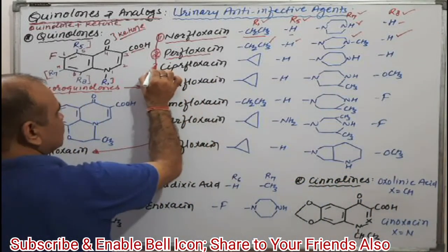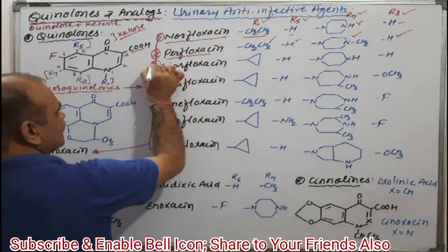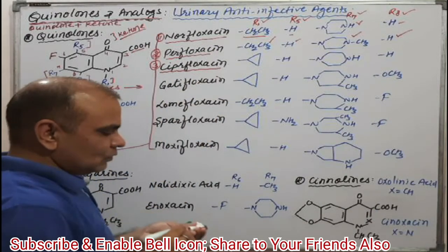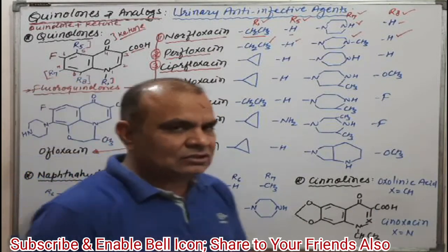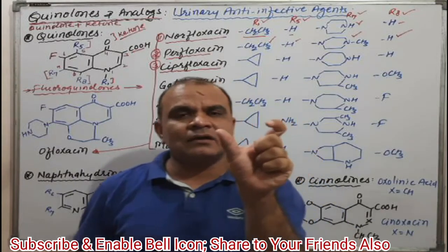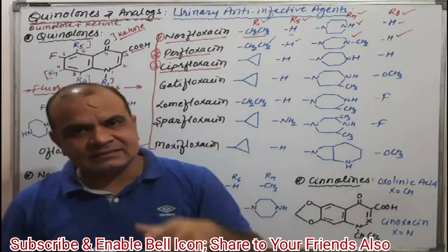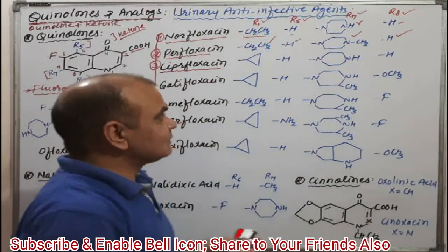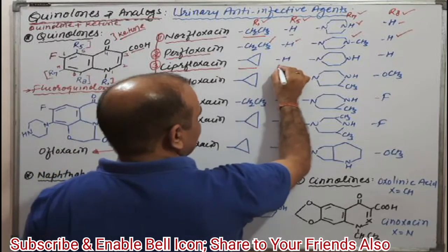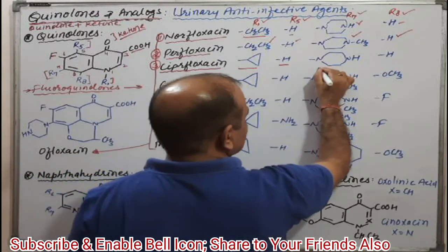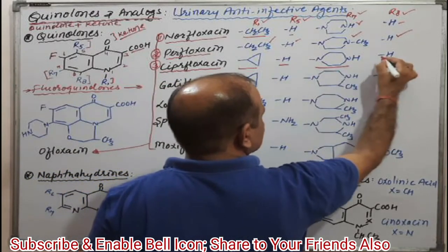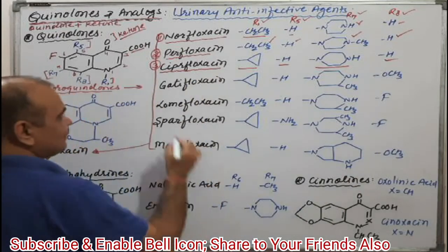The third molecule is ciprofloxacin. 'Cipro' tells you that cyclopropyl is present — a cyclopropyl ring at R1. R5 is hydrogen, R7 is the piperazine ring system, and R8 is hydrogen.